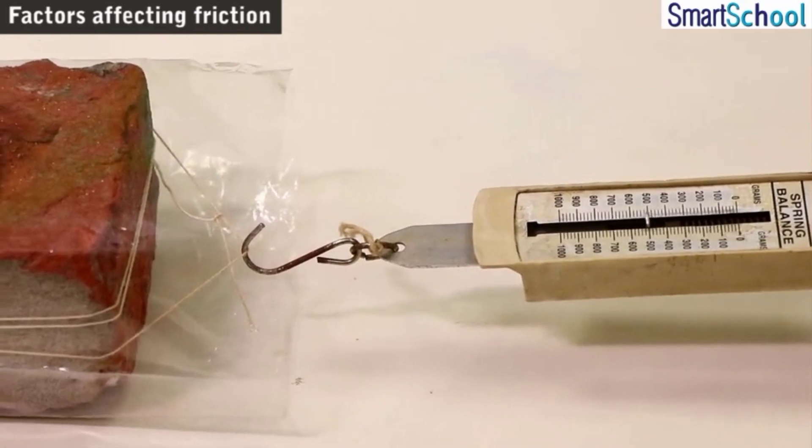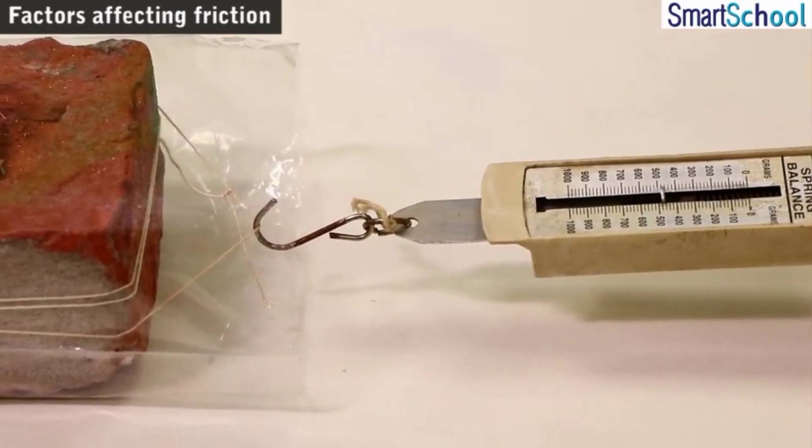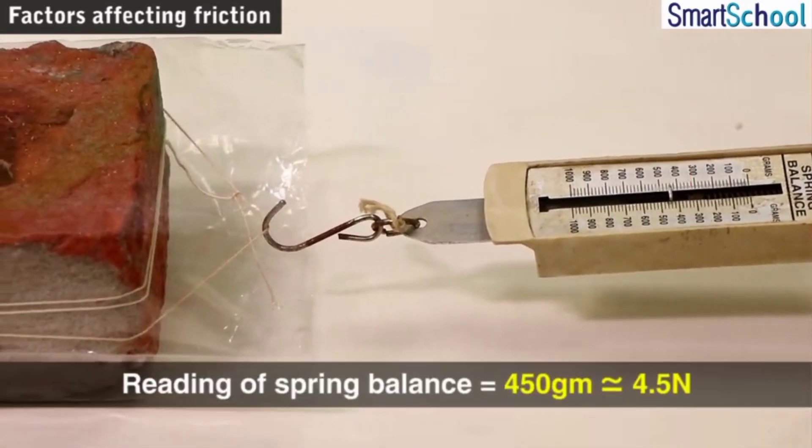So here we see that the reading of the spring balance comes out to be 450 grams, which is approximately equal to 4.5 Newtons. As a matter of fact, this is less than the previous one when the brick was without being covered with the polythene.